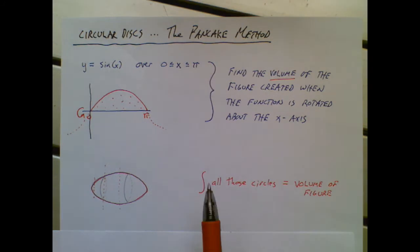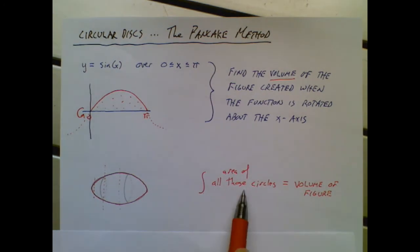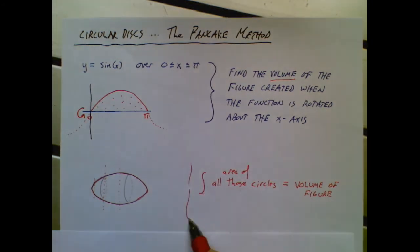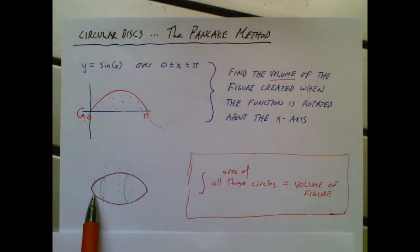So the concept is, if I could integrate the area of all those circles, or in other words, if I can total up, accumulate, add them up, all those circles areas, I would have the volume of that figure. This is a very deep concept. The accumulation of all those circles ends up giving me the volume of that figure.